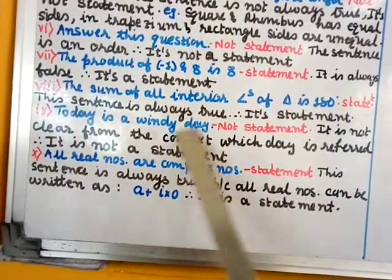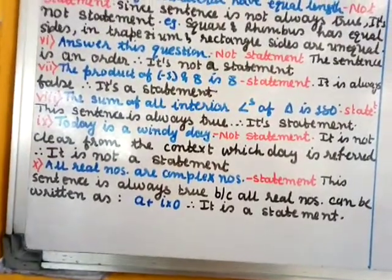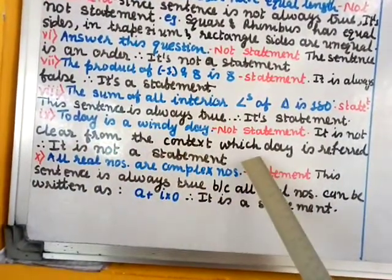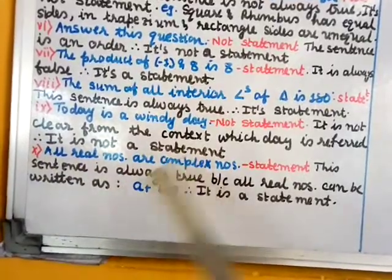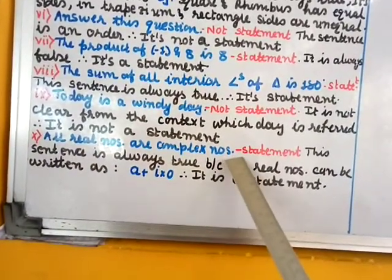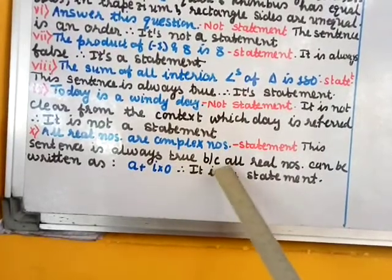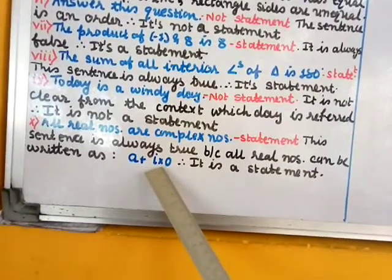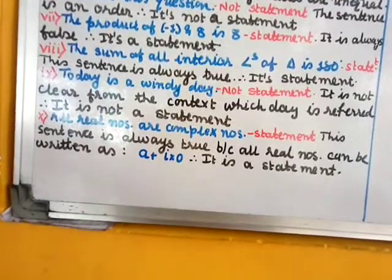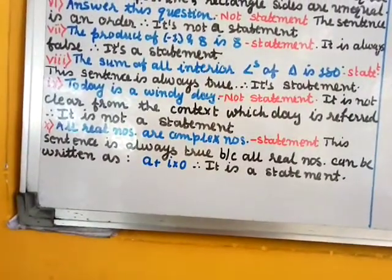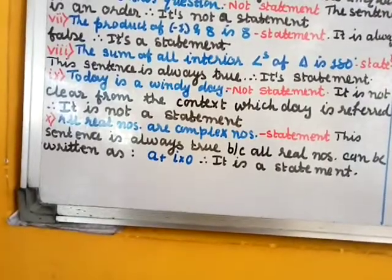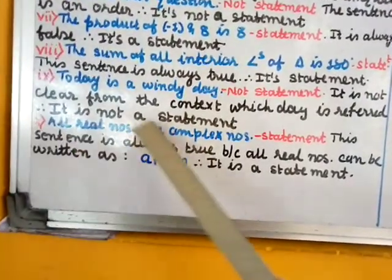Roman numeral nine: 'Today is a windy day' — today refers to which day is not clear; it can be any day, and it is not clear from the context which day is referred to, therefore it is not a statement. Roman numeral ten: 'All real numbers are complex numbers' — this is a statement. This sentence is always true because all real numbers can be written as a plus i times zero, in the form a plus ib. Therefore it is a true statement.